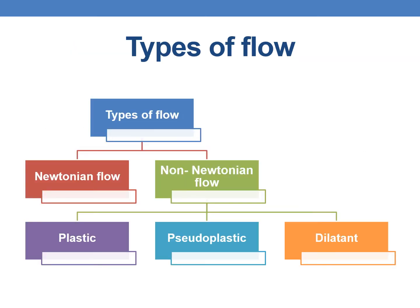Coming to the types of flow, similar to the types of system, types of flow can also be categorized into two: Newtonian flow and non-Newtonian flow. The non-Newtonian flow is further subcategorized into three types: plastic flow, pseudoplastic flow, and dilatant flow. In the previous session, we discussed plastic flow, and in the current session we will be focusing on pseudoplastic flow.